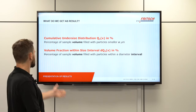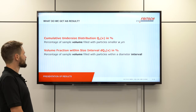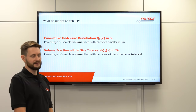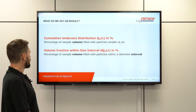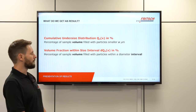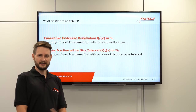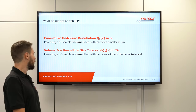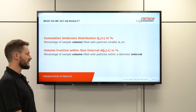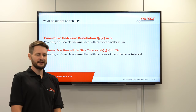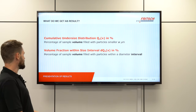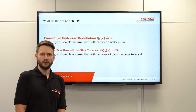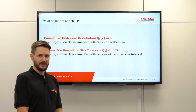The sum curve, also called the cumulative undersize distribution, is defined as the percentage of the sample volume filled with particles smaller than size x. The particle size distribution, also called the volume fraction within a size interval, is defined as the percentage of sample volume filled with particles within a certain diameter interval.